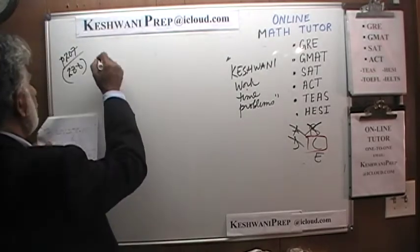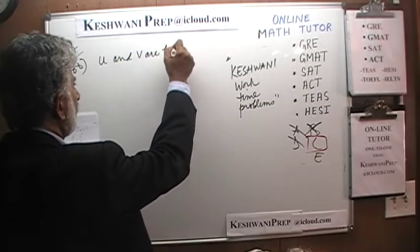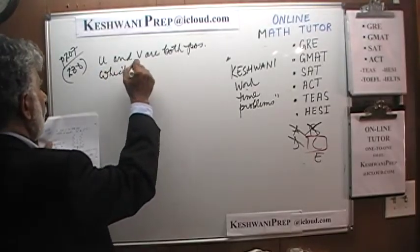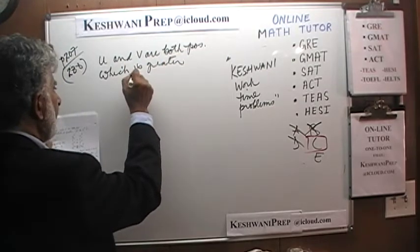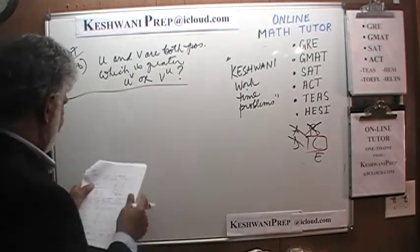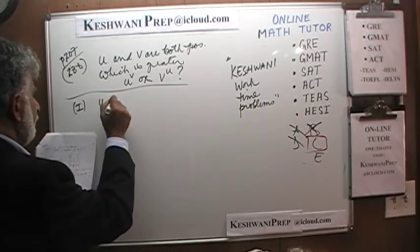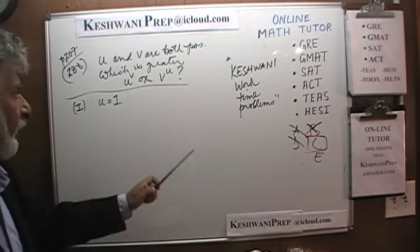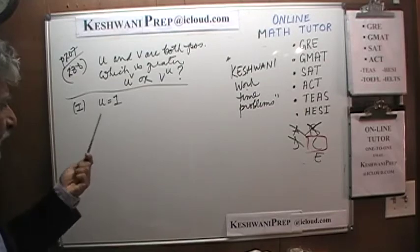Problem 288: we are told that U and V are both positive. The question is: which is greater — U raised to V, or V raised to U? The first statement tells us that U is equal to 1. If U equals 1, is that enough to figure out which is bigger? You should be able to tell right away — that's not enough.